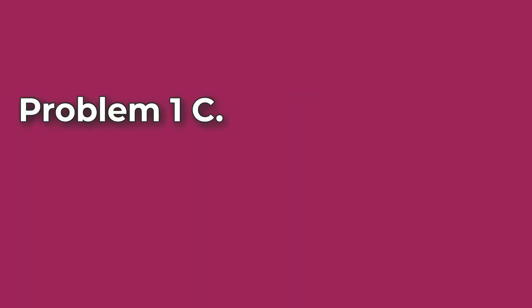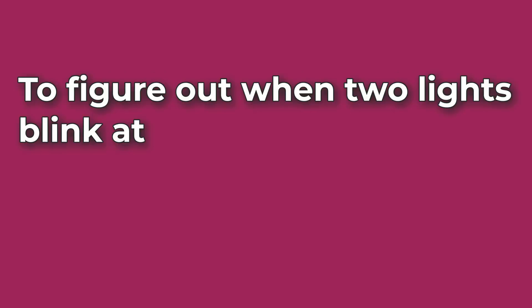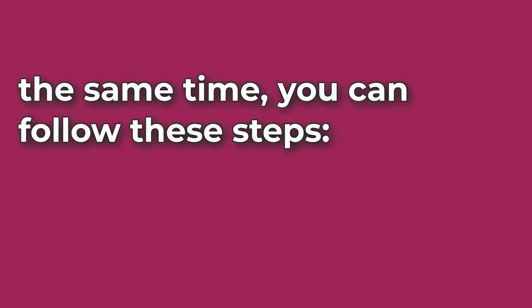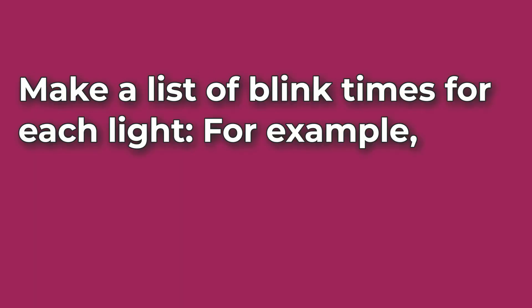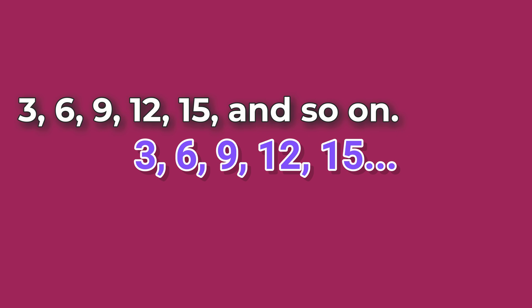Problem Number 1C. Explain how to determine when two lights blink together. To figure out when two lights blink at the same time, you can follow these steps. Make a list of blink times for each light. For example, if one light blinks every 3 seconds, list its times like 3, 6, 9, 12, 15, and so on.